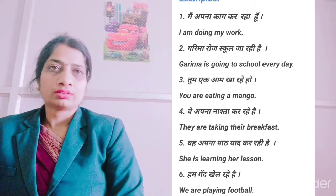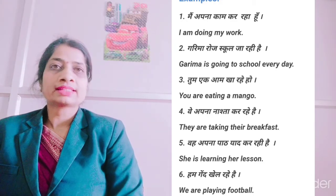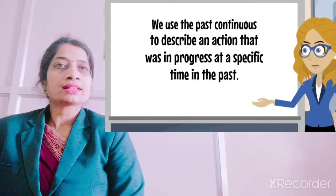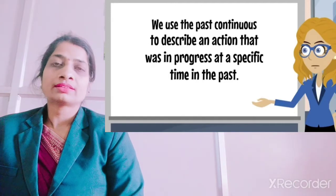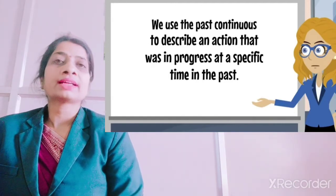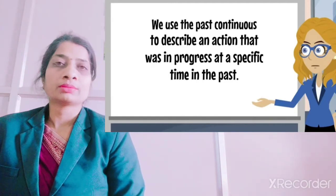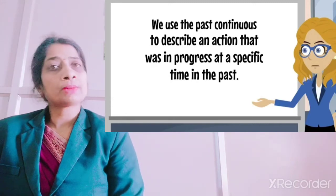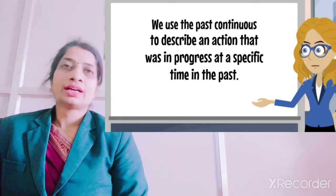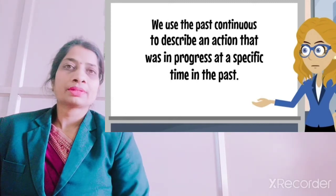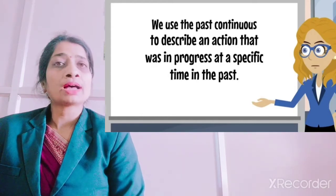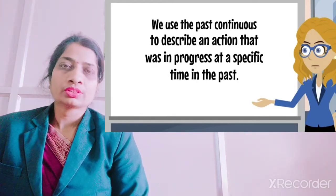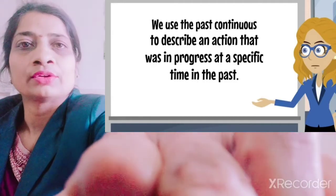Next is past continuous tense. Again, as from the name, we know that continuous means something that is going on — matlab jo chal raha hota hai. Aur past ka matlab hota hai jo ho chuka hai. Toh yahan par iska matlab hai ki woh actions jo past mein continued tha — toh unhein hum past continuous tense mein rakhte hain.